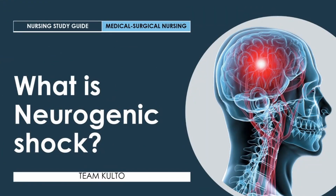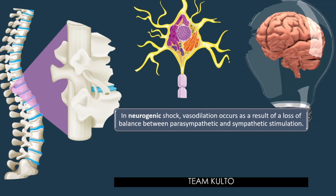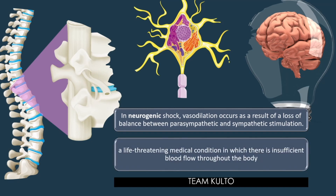So, let's answer the question: what is neurogenic shock, nurses? Neurogenic shock is a distributive type of shock — I want you to remember that. In neurogenic shock, vasodilation occurs as a result of a loss of balance between parasympathetic and sympathetic stimulation. It is a type of shock or life-threatening medical condition in which there is insufficient blood flow throughout the body, caused by the sudden loss of signals from the sympathetic nervous system that maintain normal muscle tone in the blood vessel walls. When you talk about neurogenic shock, remember that parasympathetic stimulation is involved.